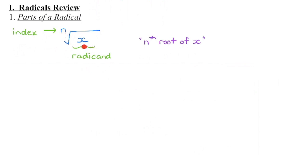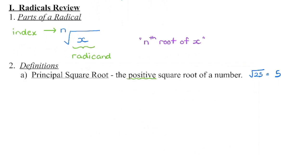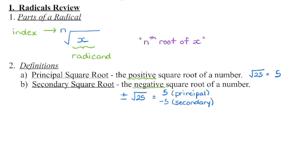What's underneath that radical symbol is what we call the radicand, and we would read this as the nth root of x. The principal square root of a number is the positive root. The secondary square root of a number is the negative root.